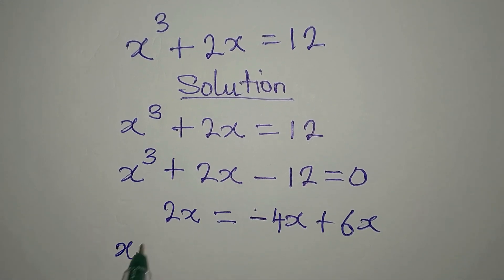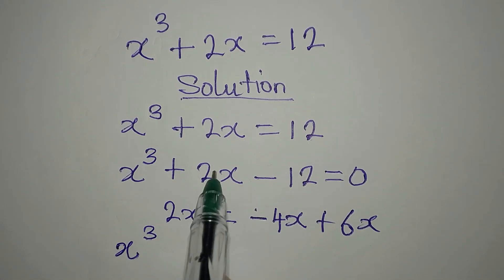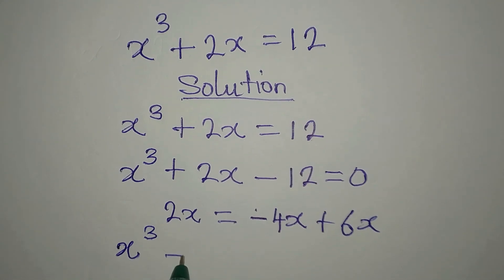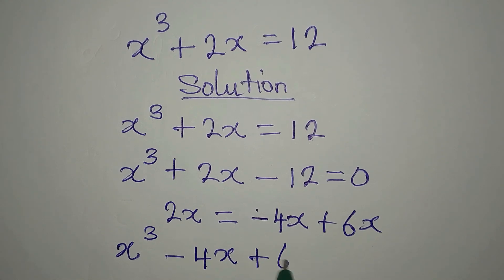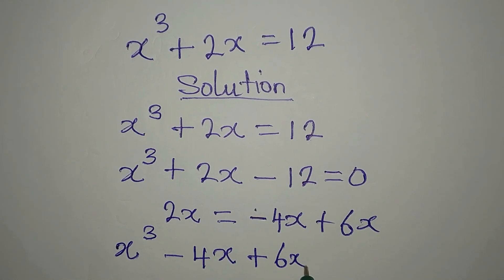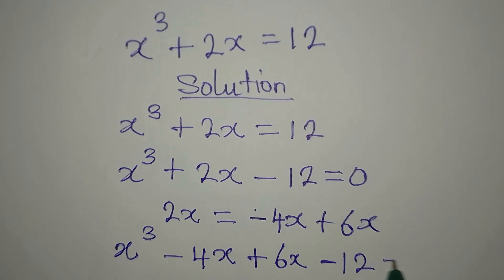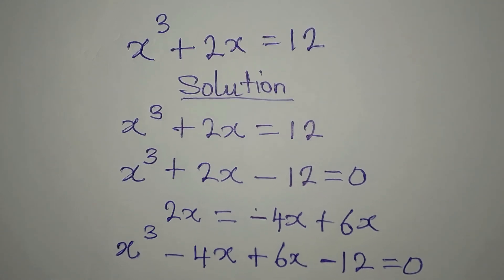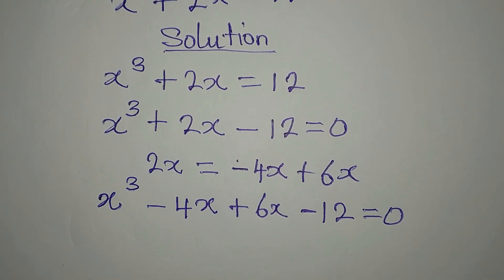Now we write x to the power of 3, then in place of 2x we write minus 4x plus 6x, then minus 12, and everything equals 0.